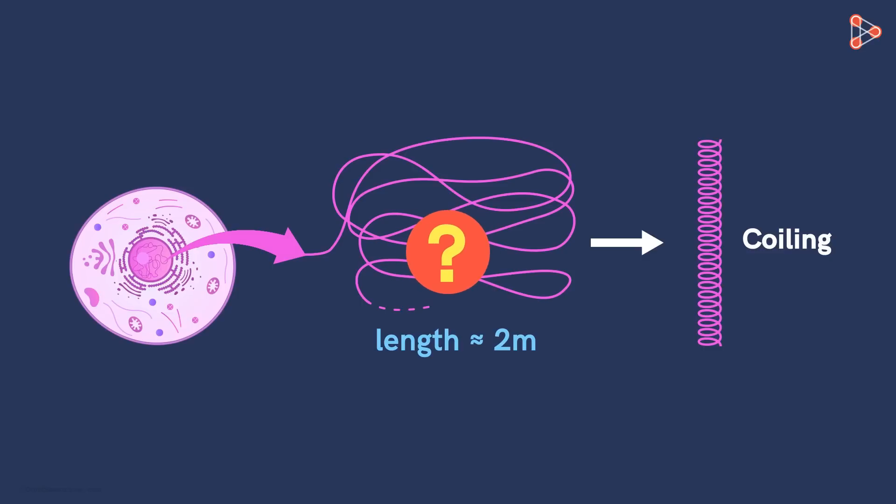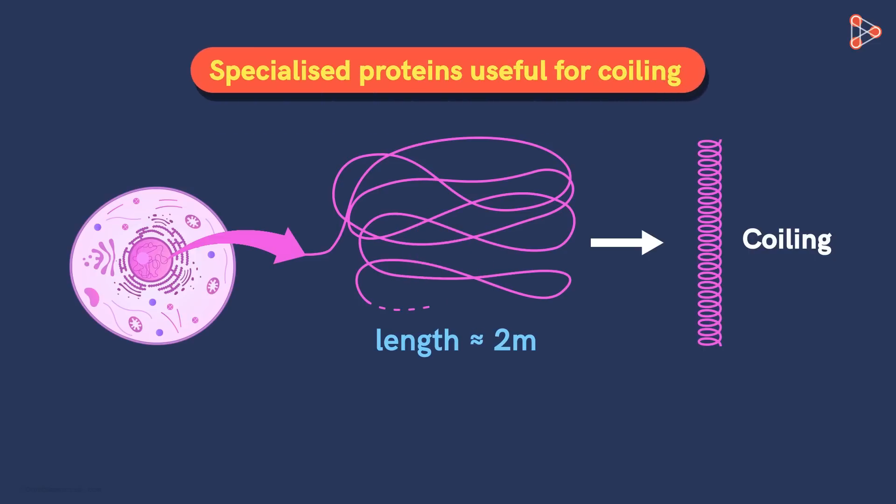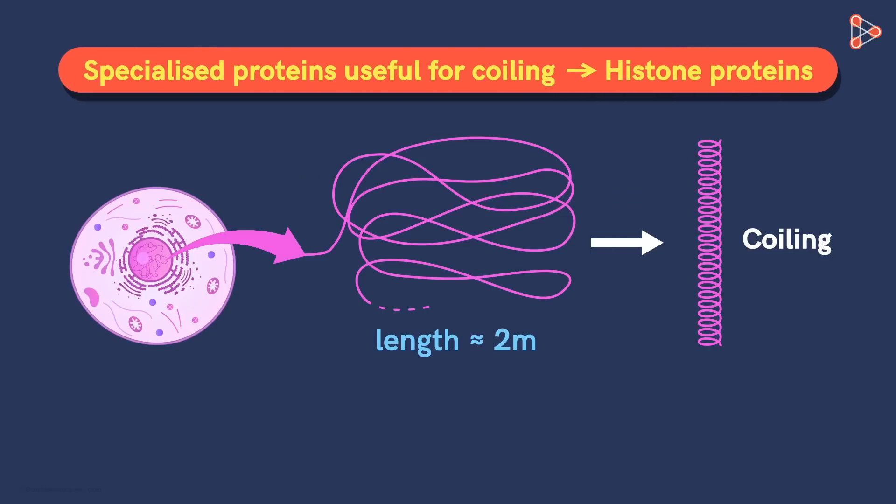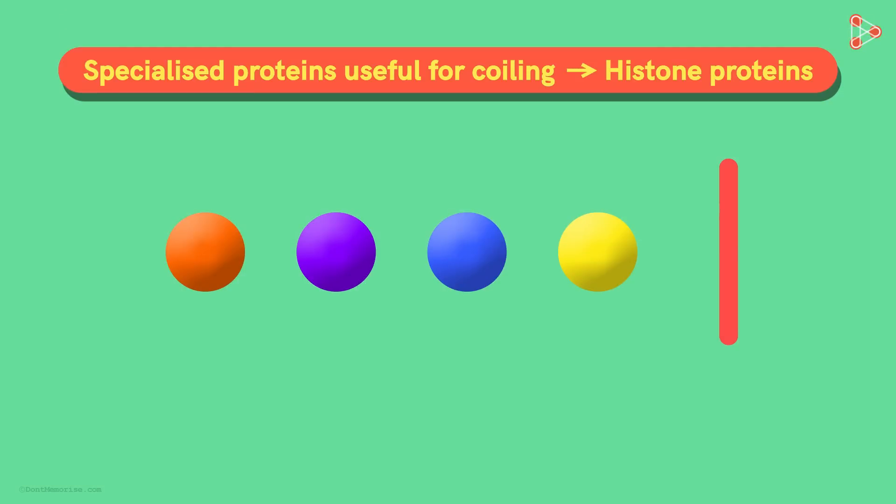But what does it coil around? Is there any support for the structure? Or does the long stretch coil around itself? Well, there are highly specialized proteins that help us in this! These are called the histone proteins! A total of 5 histone proteins help in the wrapping of the DNA molecule!